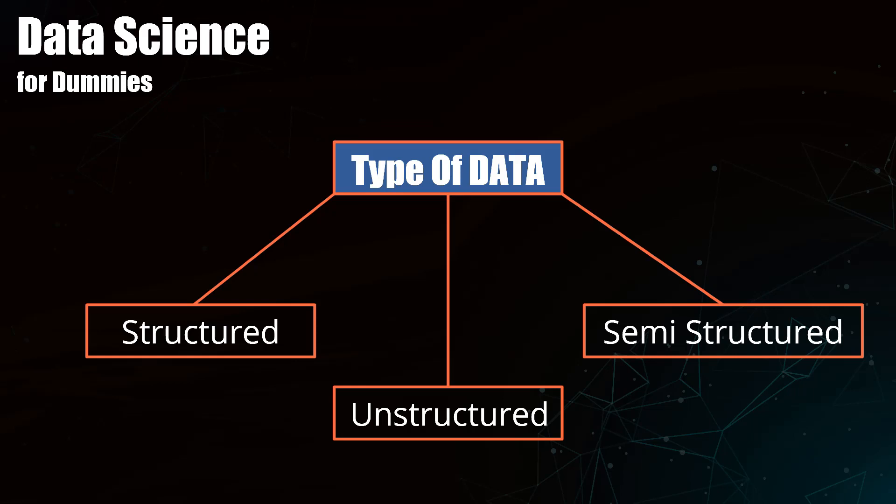And when I say semi-structured, it's all about data which doesn't fit into the structured database system but is nonetheless structured by tags that are useful in creating a form of order and hierarchy. So these are the three types of data which data science and data engineering work upon.